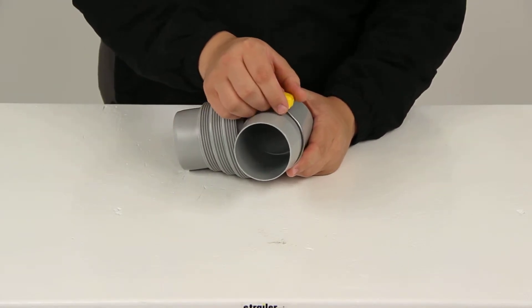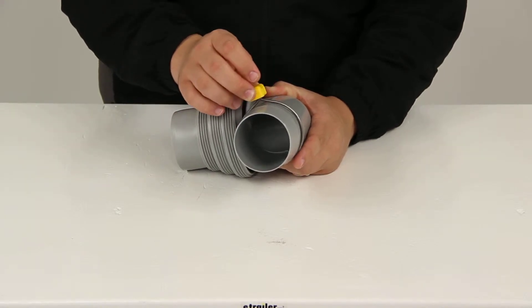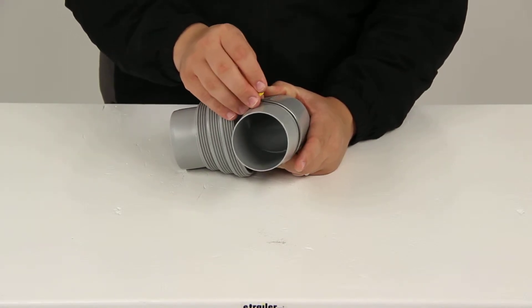Just turn the spin lock ring around the sewer hose and the wires are going to engage and hold everything secure.